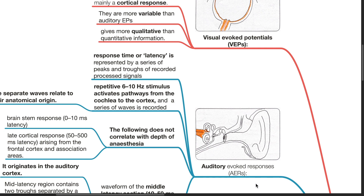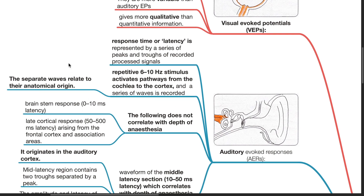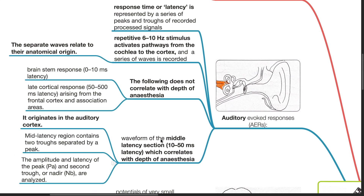Auditory evoked responses (AERs): the response time or latency is represented by a series of peaks and troughs of the recorded signal. A repetitive 6 to 10 Hz stimulus activates the pathways from the cochlea to the cortex, and a series of waves is recorded. The separate waves relate to their anatomical origin. The brainstem response at 0 to 10 ms latency and late cortical response at 50 to 500 ms latency do not correlate with depth of anesthesia. It is the middle latency section, 10 to 50 ms, which correlates with depth of anesthesia and originates in the auditory cortex.